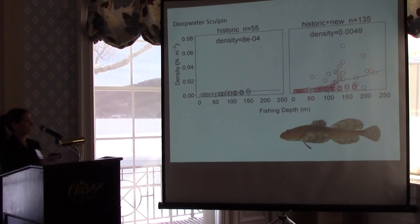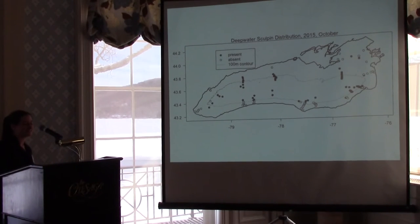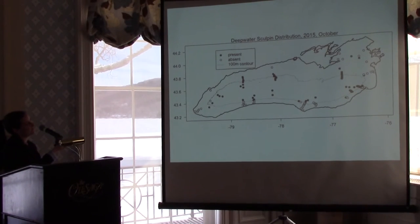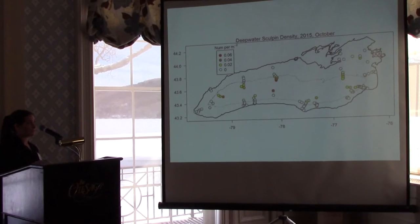To better understand the habitat occupied by deepwater sculpin, we looked at presence-absence data. This data line represents the 100-meter bathymetric contour line. Deepwater sculpin were caught on both sides of the 100-meter line at all of the deepest trawl sites. In the eastern basin they were caught as well, even though the eastern basin has predominantly shallow area. Refining this data further, the highest densities were found towards the deepest part of the basin, with the exception of one eastern site in the upper right-hand corner.